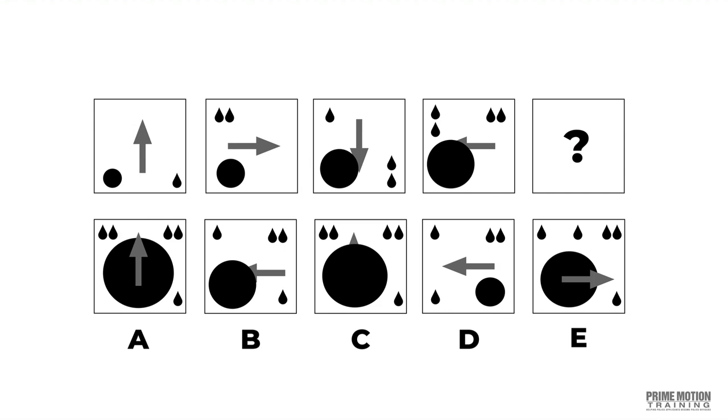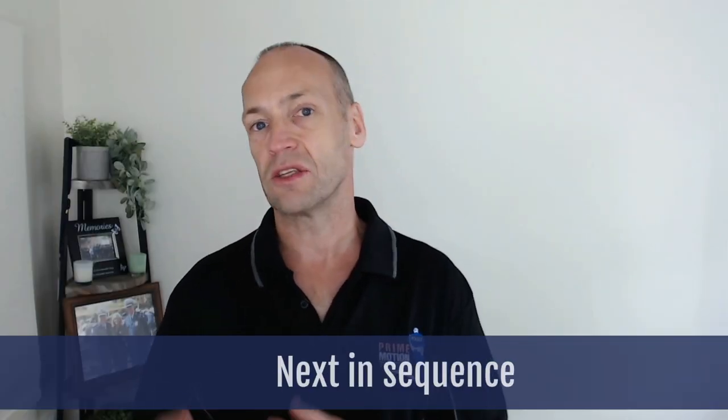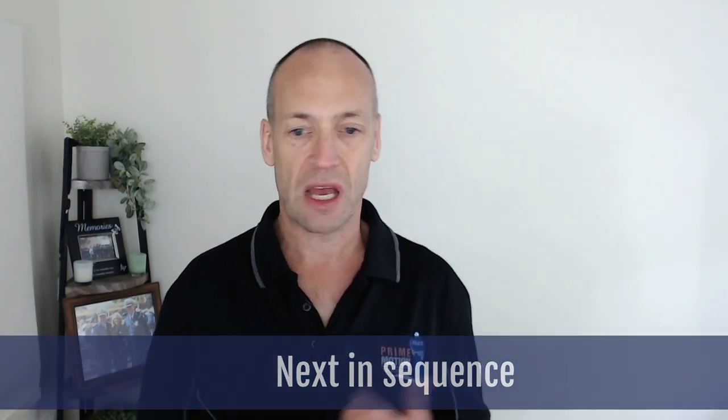But either way, there's a little tip to deal with these particular types of abstract reasoning questions. In this one, I guess a progression where you need to find what would be the next in sequence from the options A, B, C, D or E that are presented below. As always guys, I hope you found that helpful, and I look forward to chatting to you again soon. Cheers.